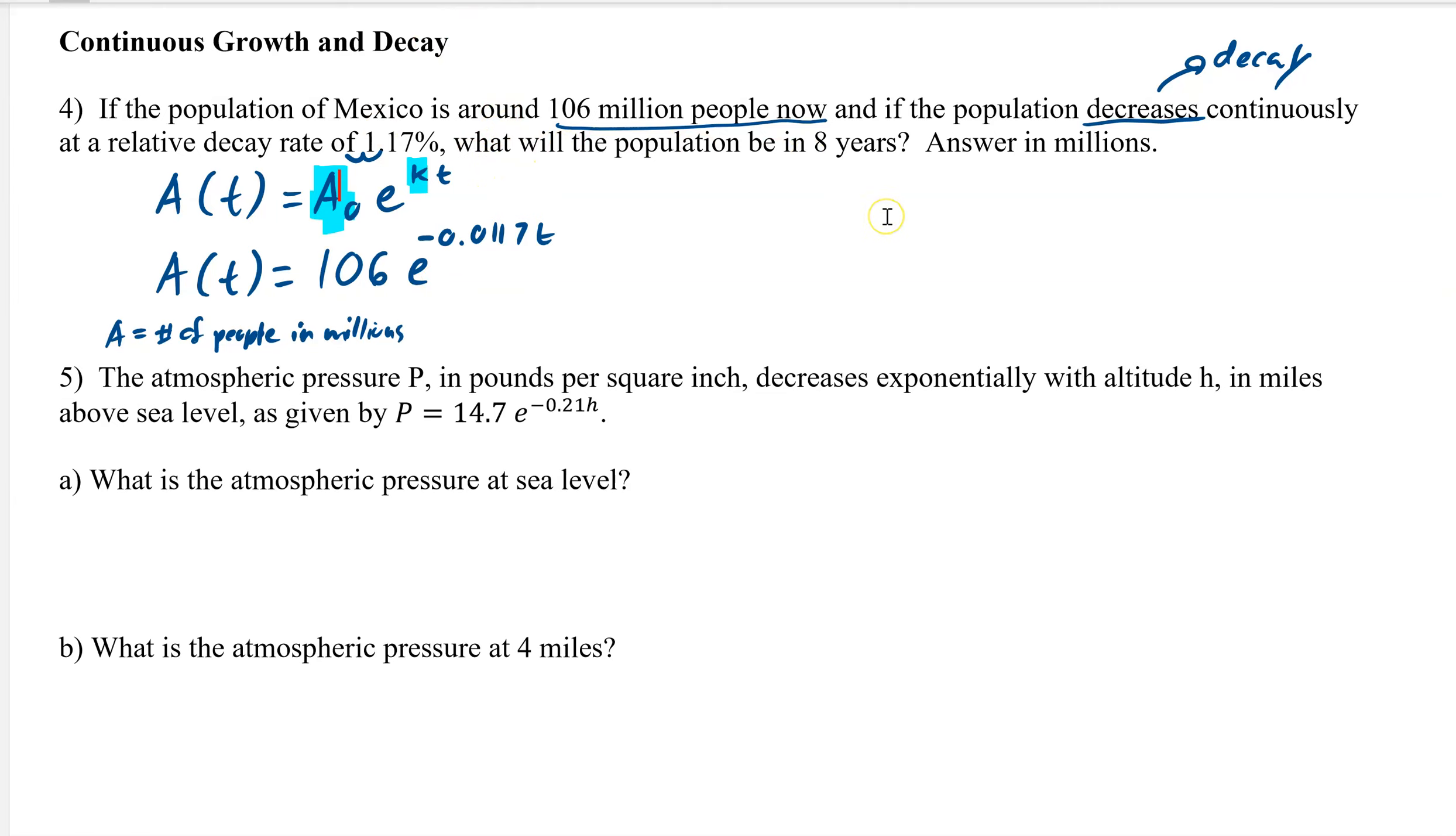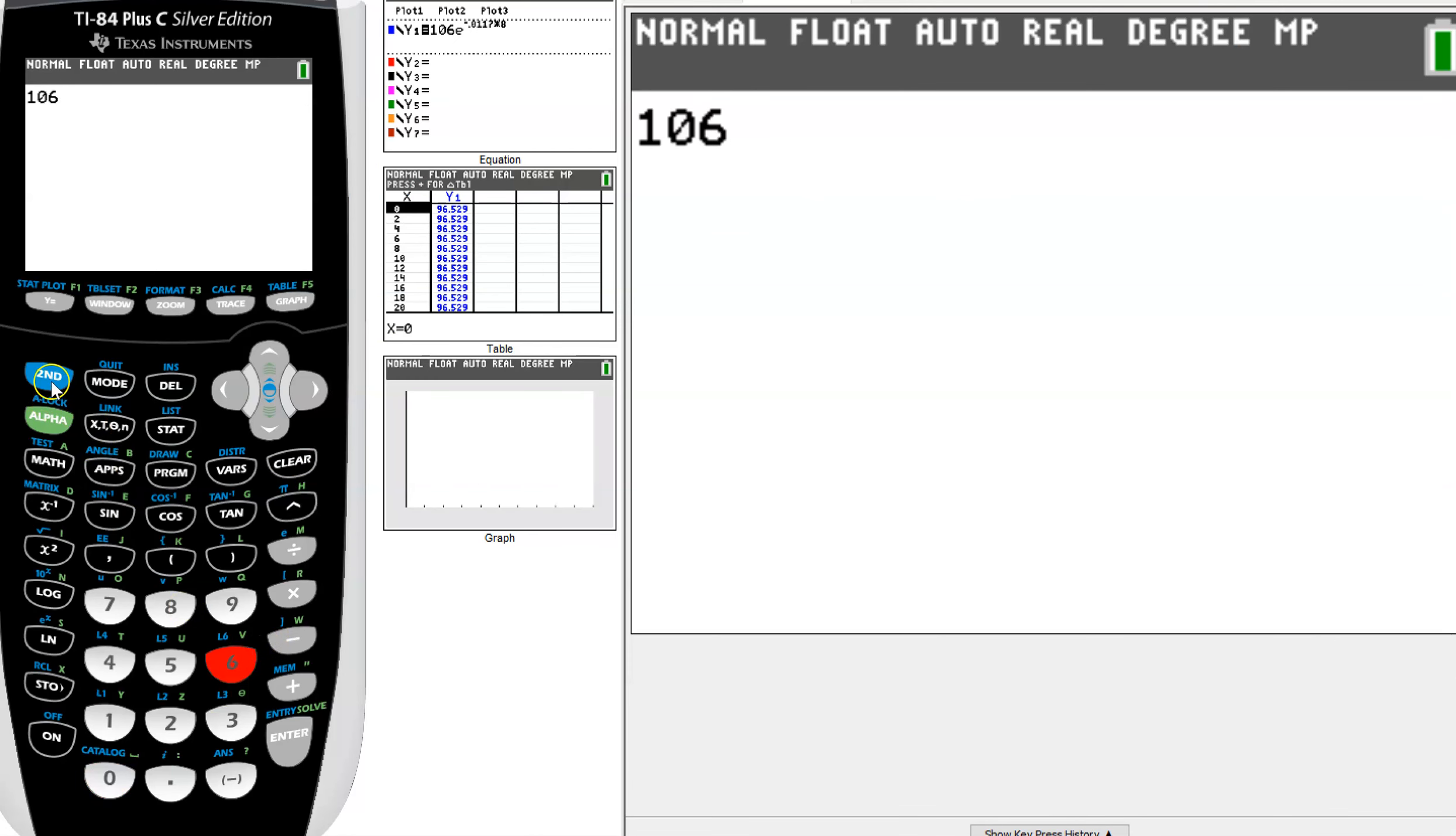So it says, what will the population be in 8 years? We just have to plug in 8, plug that in our calculator, so it's 106 million. And then to get to the exponential second, an ln, and now we have our e to the x, negative 0.0117, that's our rate, times 8 years. Hit enter, and we get 96 million .5, we'll just say .5, 96.5 million.